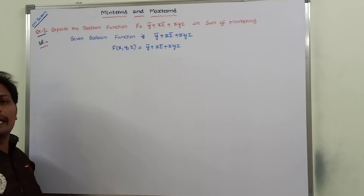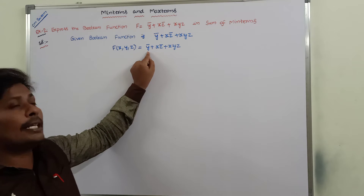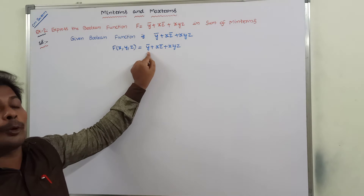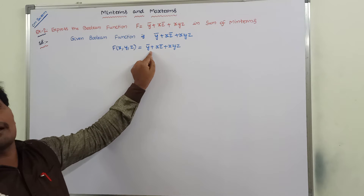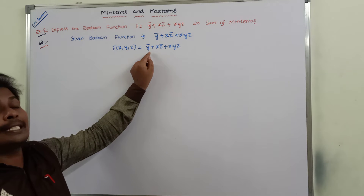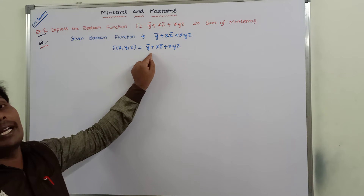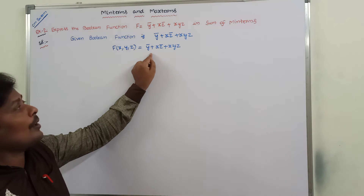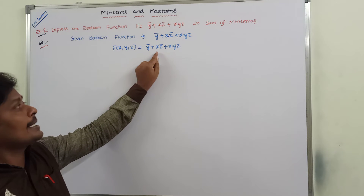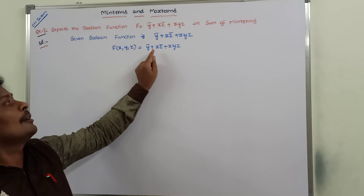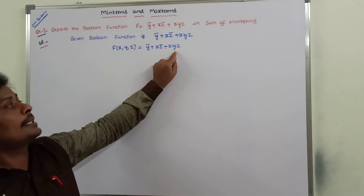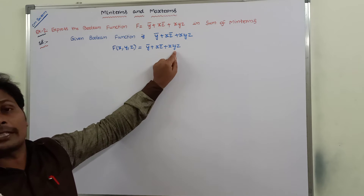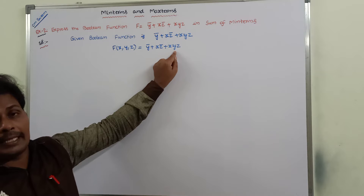In the given Boolean expression, consider the first product term. Here, two variables are missing — x and z. In the second product term, variable y is missing. In the third product term, there is no variable missing.